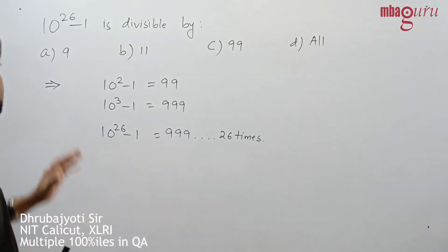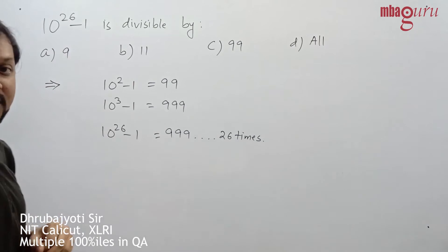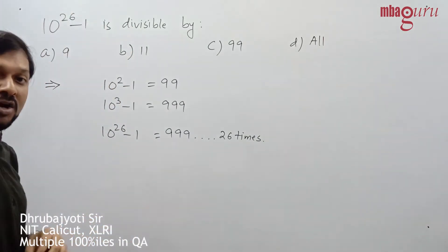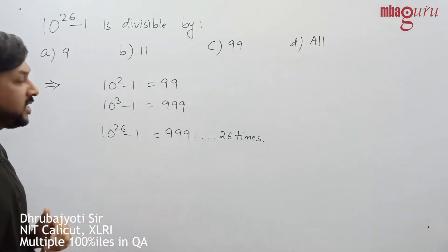The question is: 10^26 - 1 is divisible by a) 9, b) 11, c) 99, or d) all of the above. Let's understand this question.